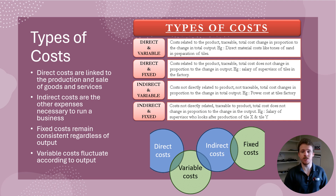Direct costs are directly linked to the production and sale of goods or services, whereas indirect costs, while still necessary to operate, are not directly linked to sales. Fixed costs remain consistent regardless of sales or output, while variable costs fluctuate depending on sales and output. As the chart and diagram demonstrate, the categories of costs can overlap, with a given cost being both direct and variable, or indirect and fixed, and so on. More on the specific mechanics of that shortly.